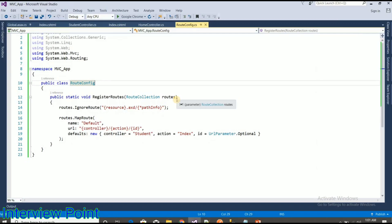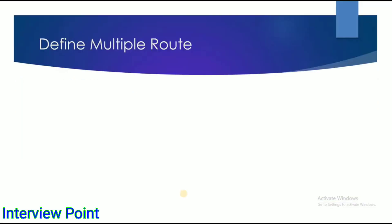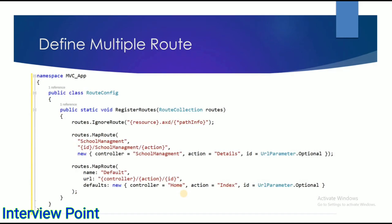One question that comes to mind: is ASP.NET MVC and Web API routing the same? The answer is no, because Web API uses HTTP verbs but ASP.NET MVC uses the URI path. The next question is: can we define multiple routes in ASP.NET MVC? The answer is yes. We can define multiple routes in the MVC application — this is the default route and we can define another route alongside it.